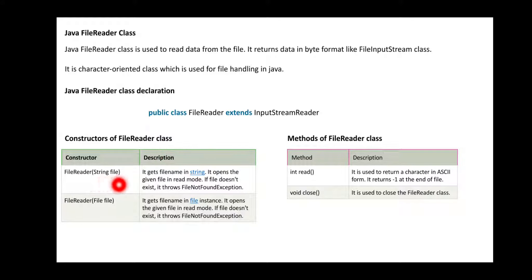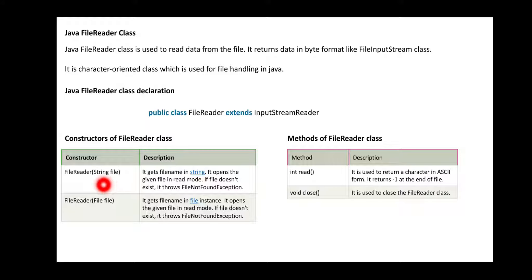The first constructor is FileReader(String file) — it gets the file name as a string and opens the given file in read mode. If the file does not exist, it throws a FileNotFoundException. FileReader accepts the file information as a string value, opens it for reading only. If the file is present it opens in read mode; if not present, it shows FileNotFoundException.